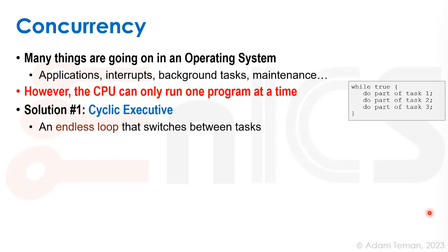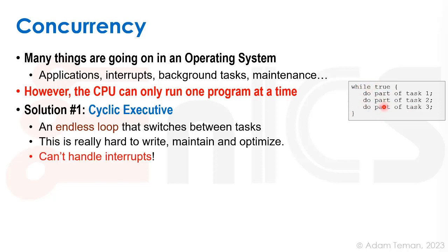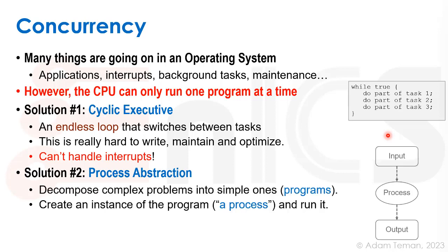A cyclic executive is essentially a loop: while true, do part of task one, then part of task two, then part of task three, and continue — an endless loop that switches between tasks. The problem is this is really hard to write, hard to maintain, hard to optimize, and it can't handle interrupts. Therefore we move to the second solution: the process abstraction.